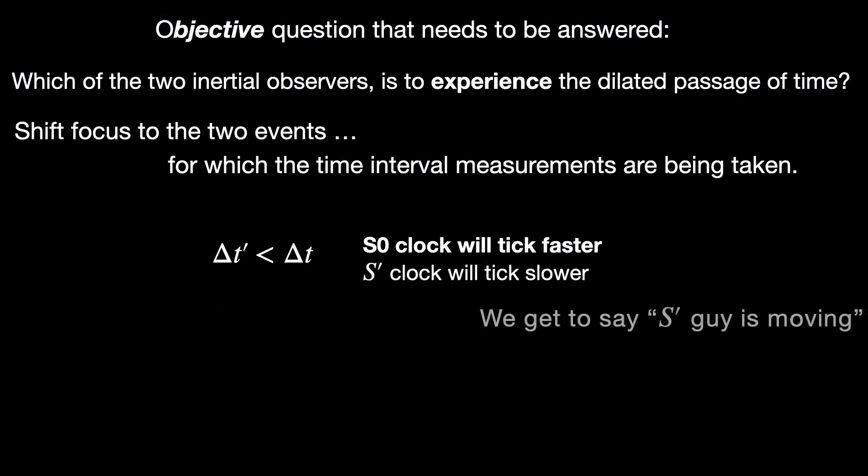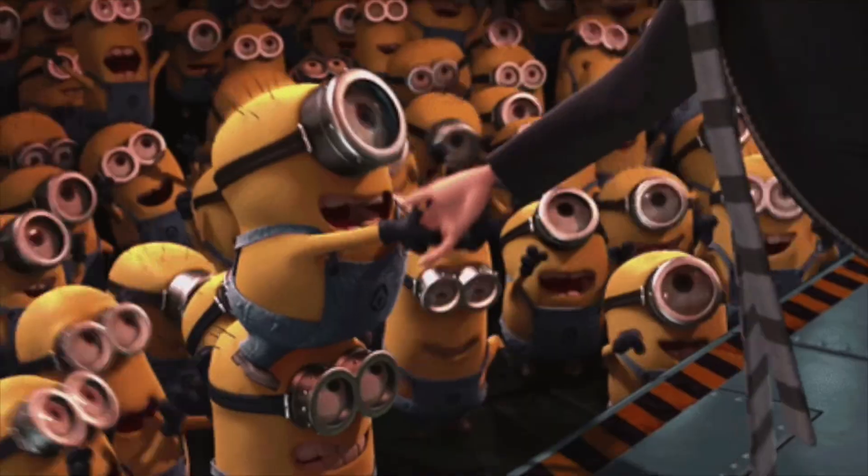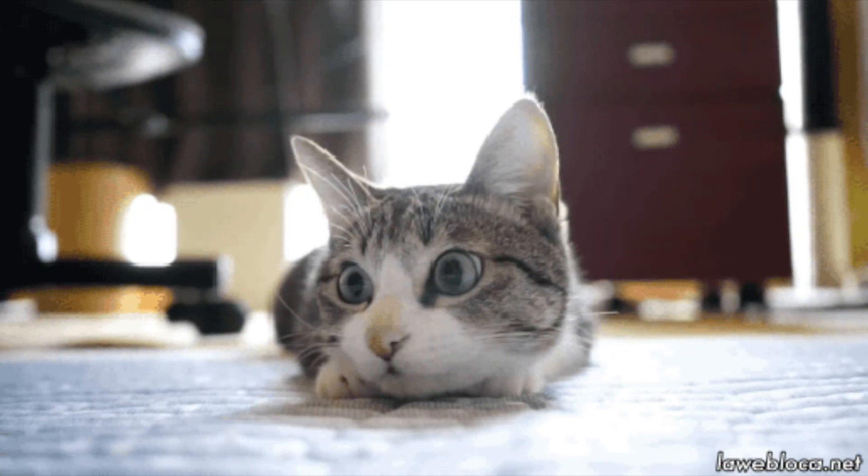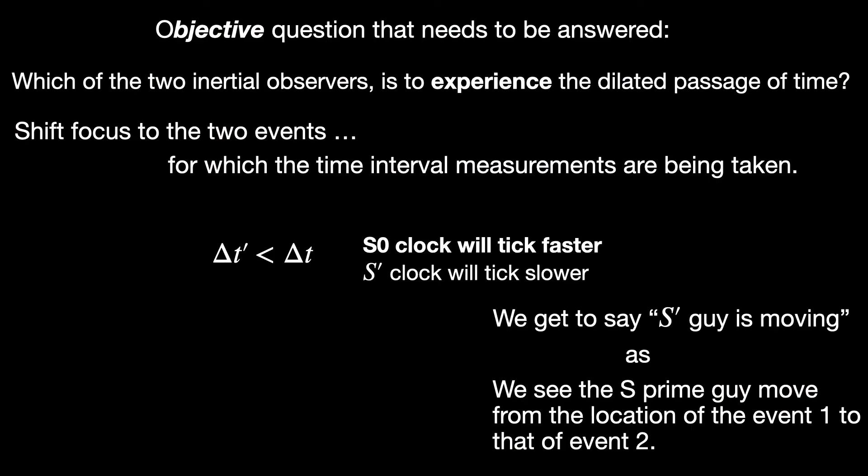In this example, it is us who get to say moving clock runs slower because it is us who see the S' guy with his clock move from the location of the first event to the location of the second event. Granted that the S' guy also sees us to be moving but not between the location of the two events that we are concerned about in this particular case. So, we are pretty much done here.